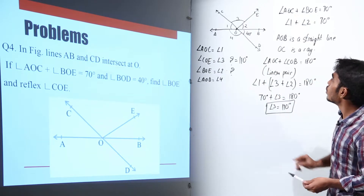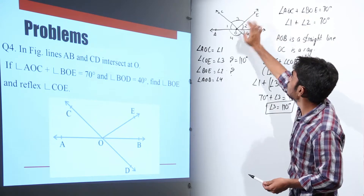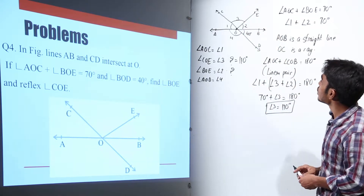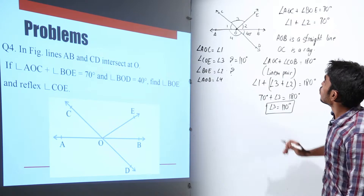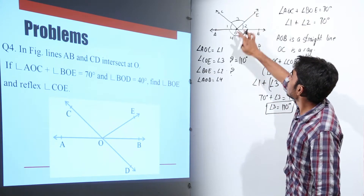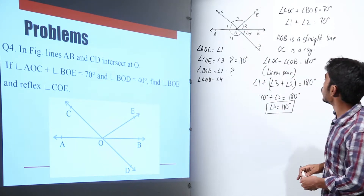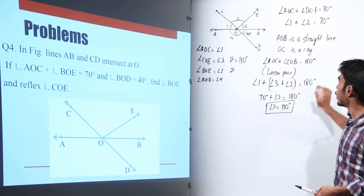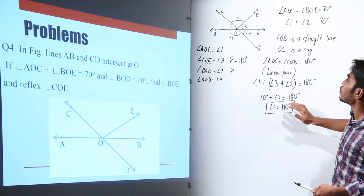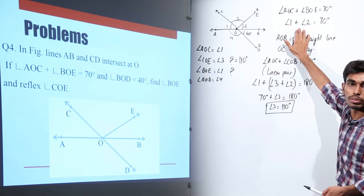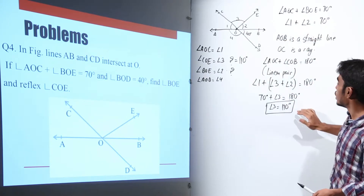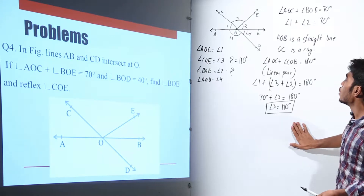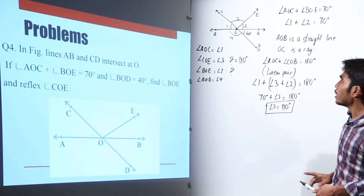Now we need to find angle BOE. To summarize what we did: angles 3, 1, and 2 form a linear pair so their sum is 180 degrees. We substituted angle 1 plus angle 2 equal to 70 degrees and got angle 3 equal to 110 degrees.